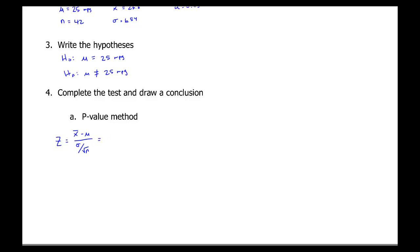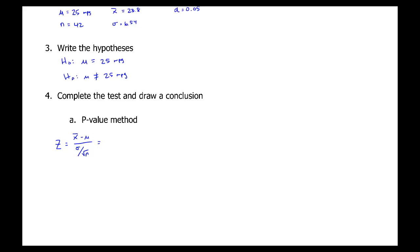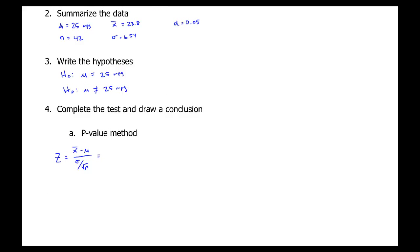So our sample mean is 23.8. Population mean claim is 25. Population standard deviation is 6.54. And sample size is 42. And you calculate all that out, we get negative 1.19.